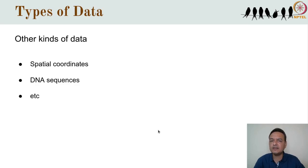There are of course other kinds of data as well. Location data are increasingly common in our studies, where spatial coordinates like latitude and longitude are key attributes. In molecular ecology, the raw data might come in DNA sequences or allele frequencies and so on — there are specialised ways of dealing with these. But for the rest of this video, we will focus on the most common data types in our field, with emphasis on numerical, specifically ratio-type data.